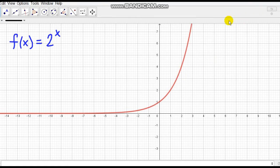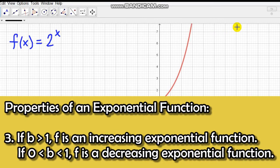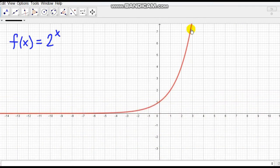The third property is that if b > 1, f is an increasing exponential function. If b is between 0 and 1, then f is a decreasing exponential function. In this graph, 2^x, the b is greater than 1, so we can see it's increasing.